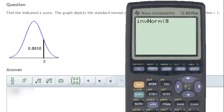Since we're finding a z-score, the input in our problem will be .8810, which is the area under the normal curve to the left of the z-score we're asked to find.